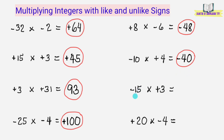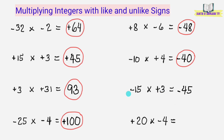Sunod, negative 15 times positive 3. 15 times 3 equals 45. At lalagyan natin ito ng negative sign, dahil magkaiba yung signs ng factors o ng numbers na ating iminultiply. Ang answer ay negative 45.